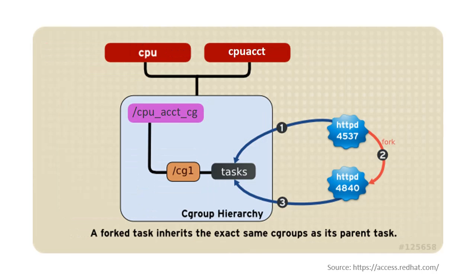Any process on the system which forks itself creates a child task. A child task automatically inherits the cgroup membership of its parent but can be moved to different cgroups as needed. Once forked, the parent and child processes are completely independent.